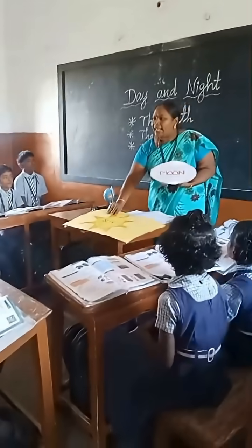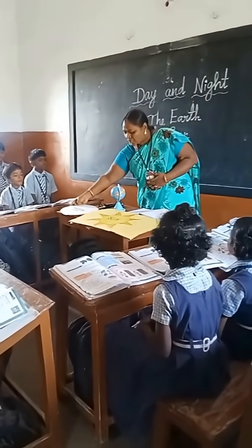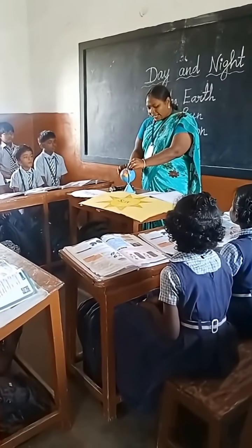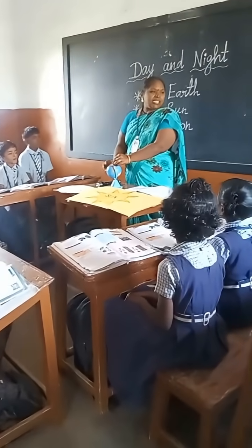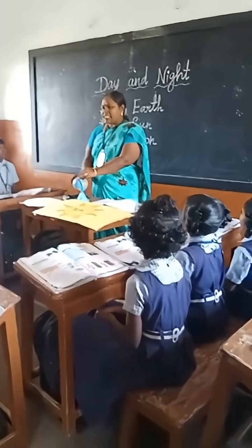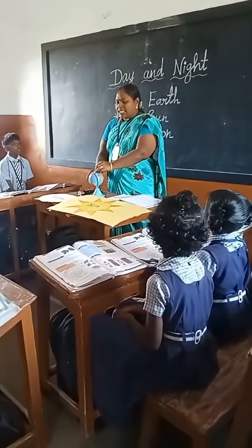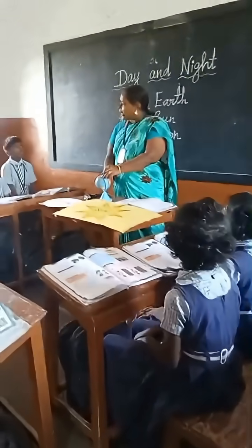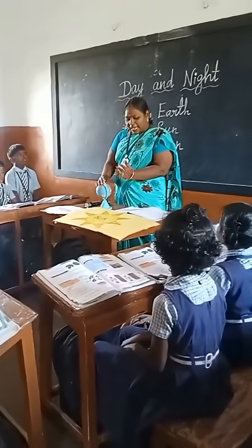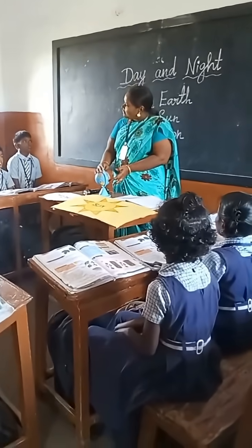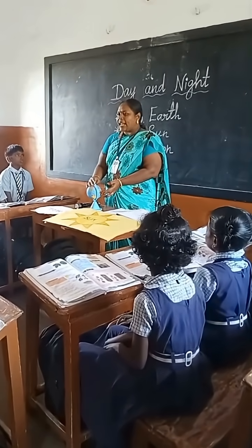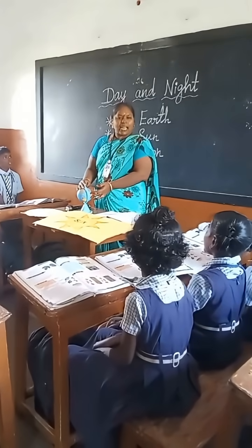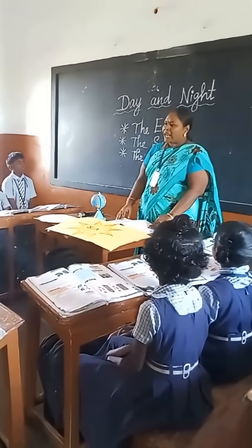Why do day and night happen? When the earth rotates, one side faces the sun. This side has day. The other side is away from the sun. That side has night. Let's do a small activity.